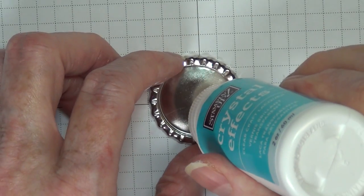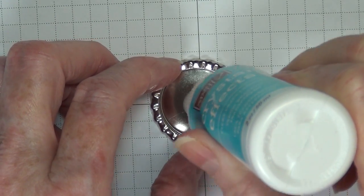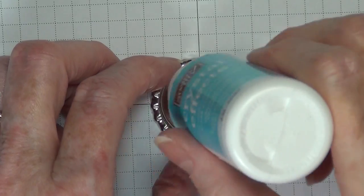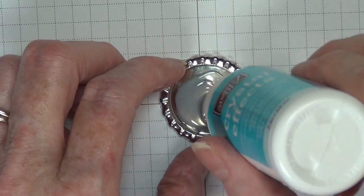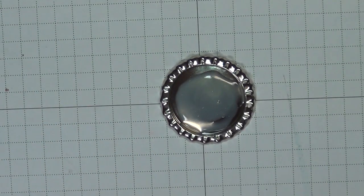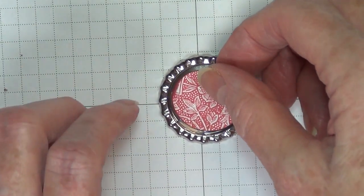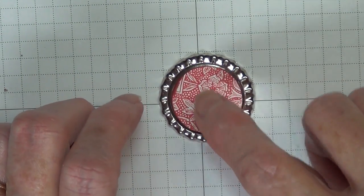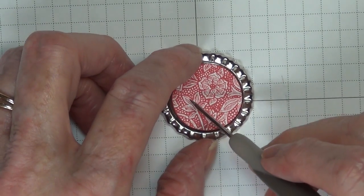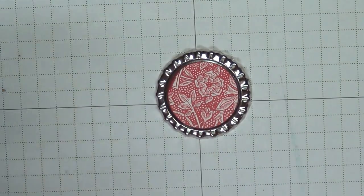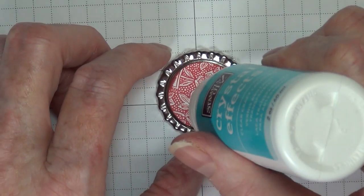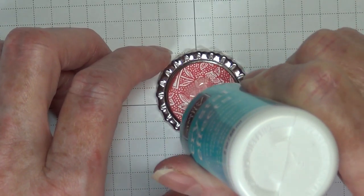Crystal effects is the key to this and I just love the effect it gives. You want to put down a fairly good layer and then you are going to place your little one inch circle into that. Now I'm going to take my paper piercer and just distribute that crystal effects out from the center and around to the edges of that bottle cap.